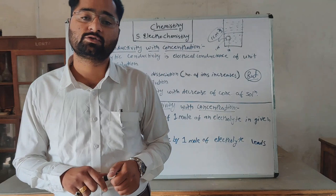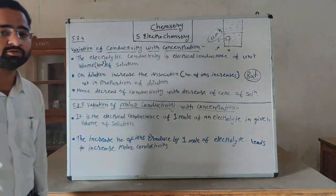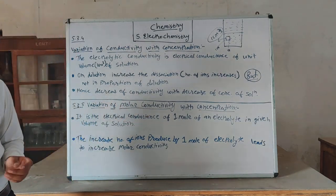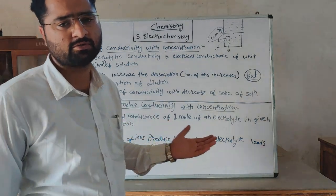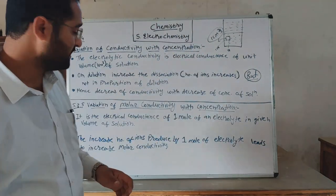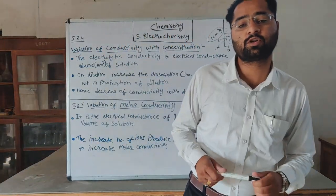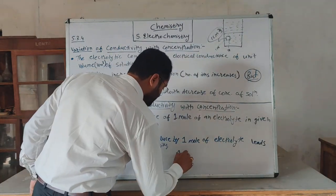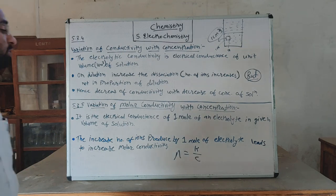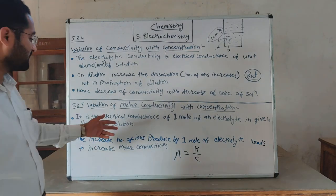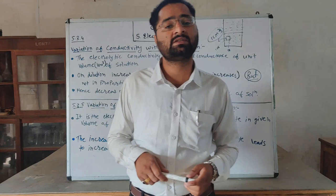Variation of molar conductivity with concentration: when concentration decreases (dilution increases), molar conductivity increases. This is because one mole of electrolyte, upon dilution, produces more ions due to increased dissociation, leading to increased molar conductivity. So molar conductivity and concentration are inversely related.